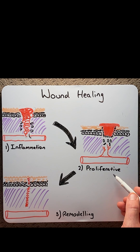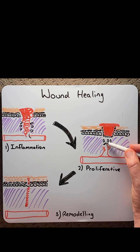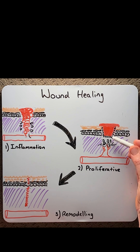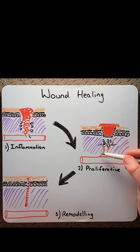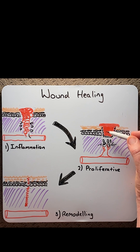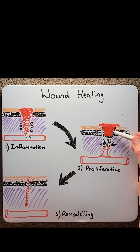The proliferative phase is where granular tissue is formed. This is caused by fibroblasts that come into the area. The fibroblasts secrete growth factors that encourage new blood vessels to grow into the area, bringing oxygen and nutrients. The growth factors will also cause new epithelial cells to start forming around the wound edge, which allows the wound edge to retract.